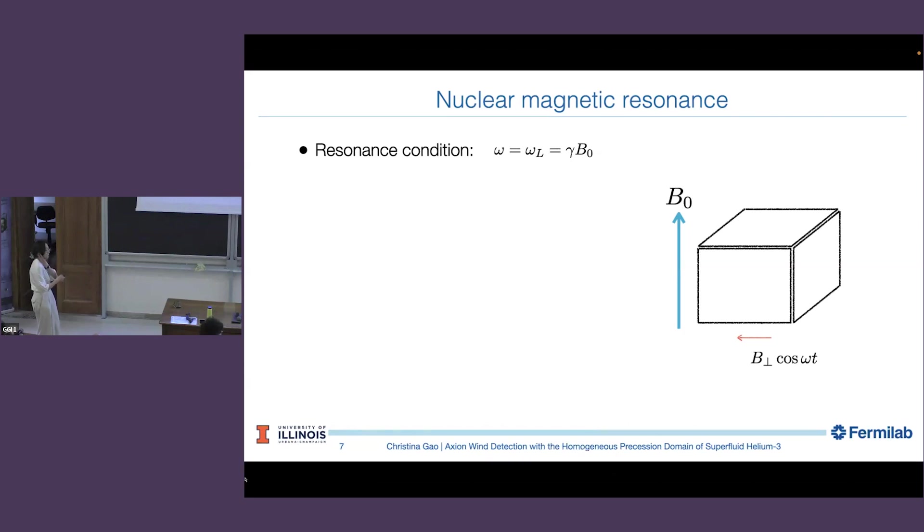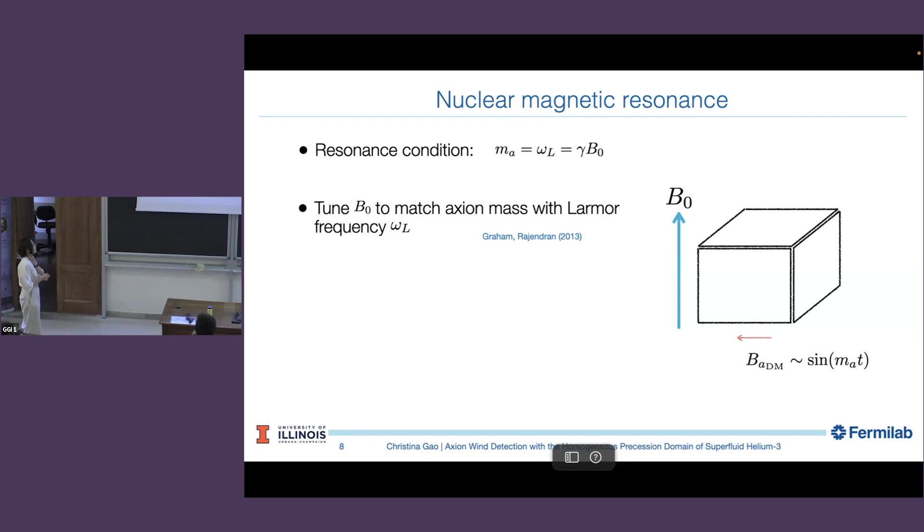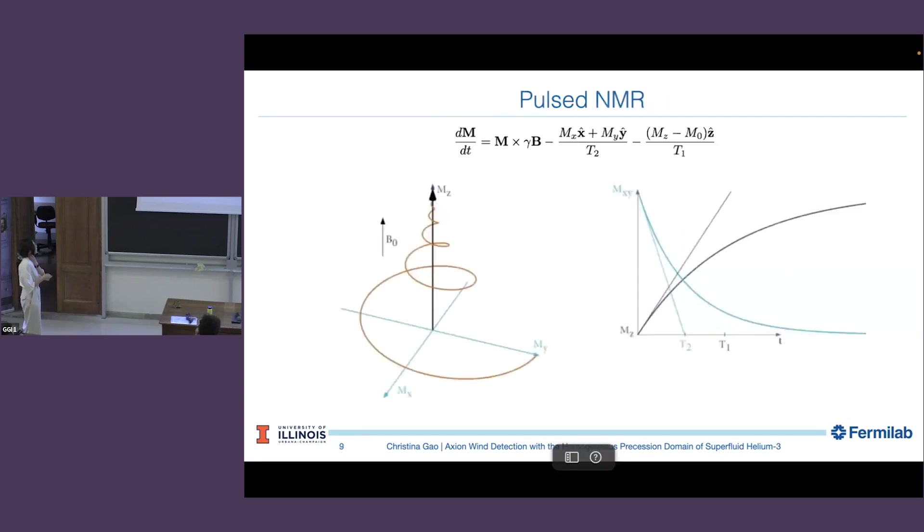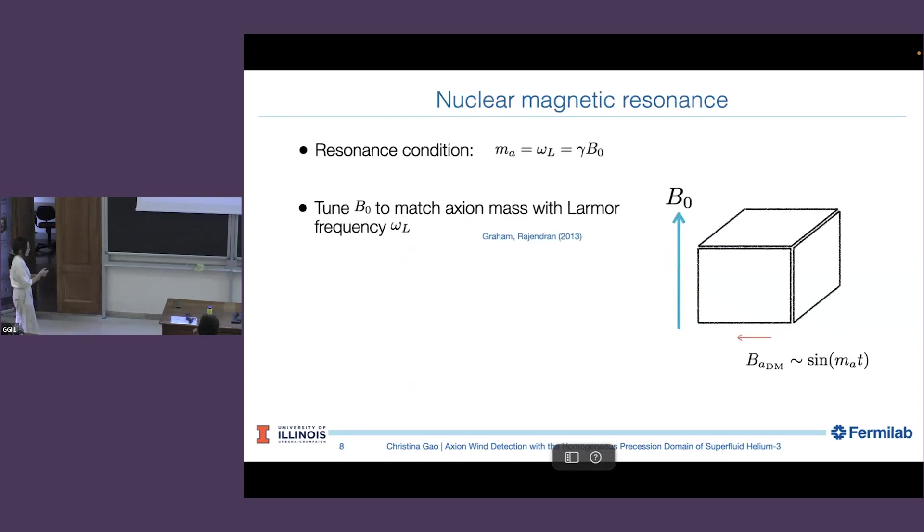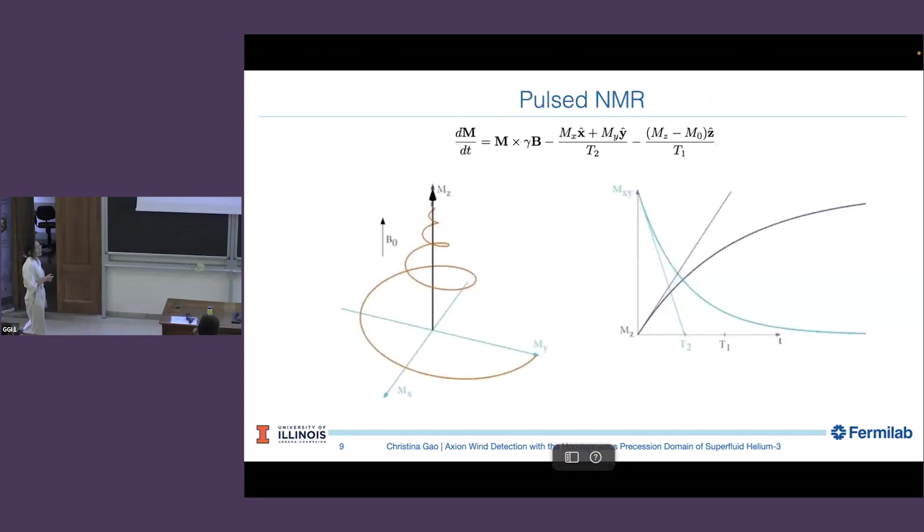The axion acts as an oscillating background field. It has a natural frequency sitting at axion mass. Imagine you can tune this B0 until the Larmor frequency of this block matches the axion frequency. Then you get an NMR signal. So this is the essence in CASPER, which was first proposed by this paper in 2013. This talk, we're going to do a pulsed NMR type of experiment.